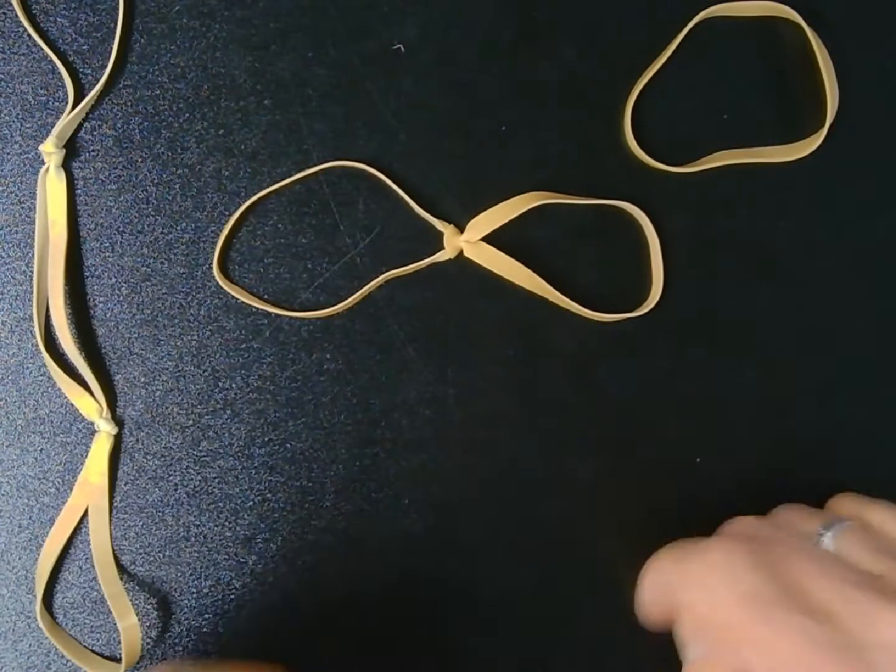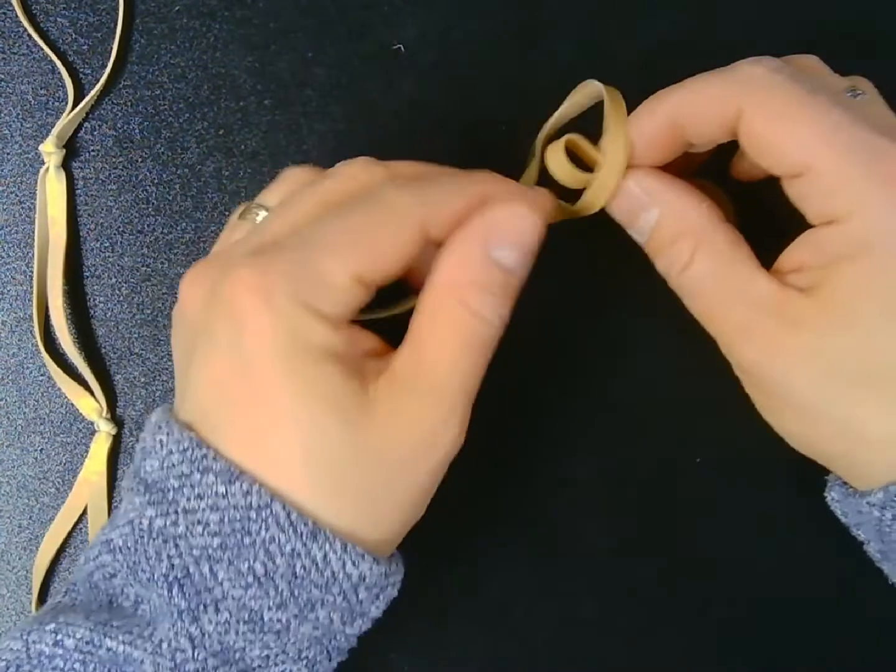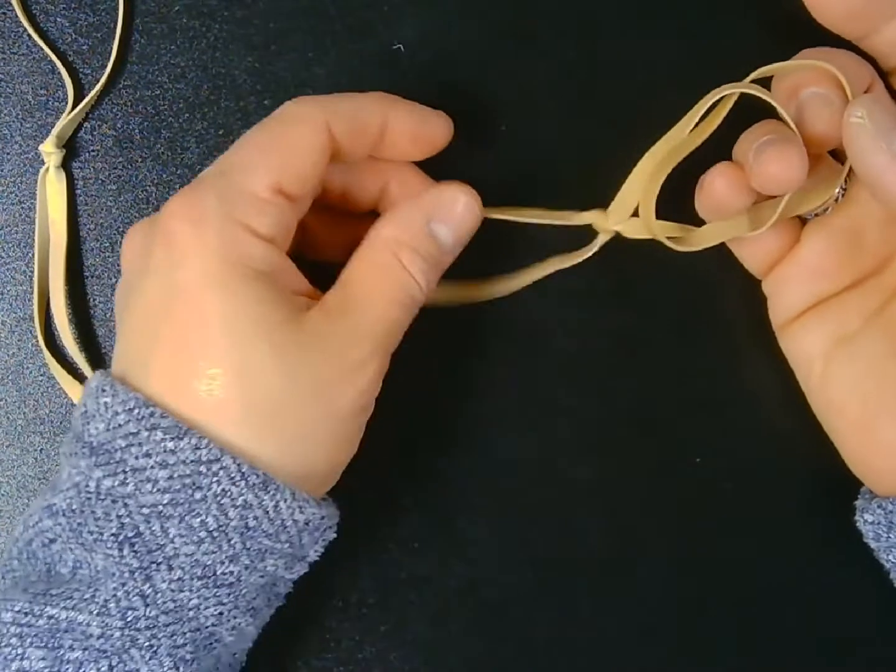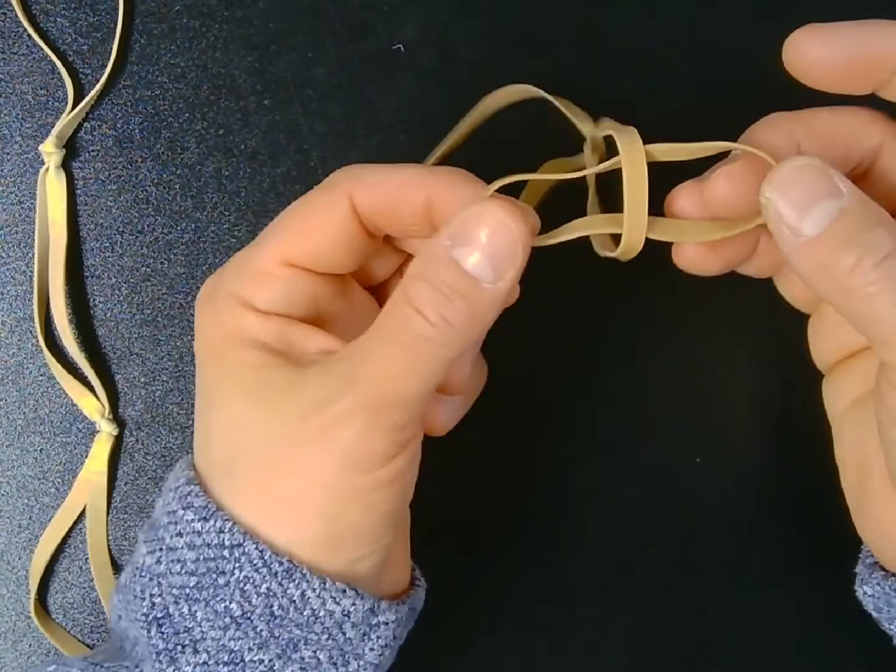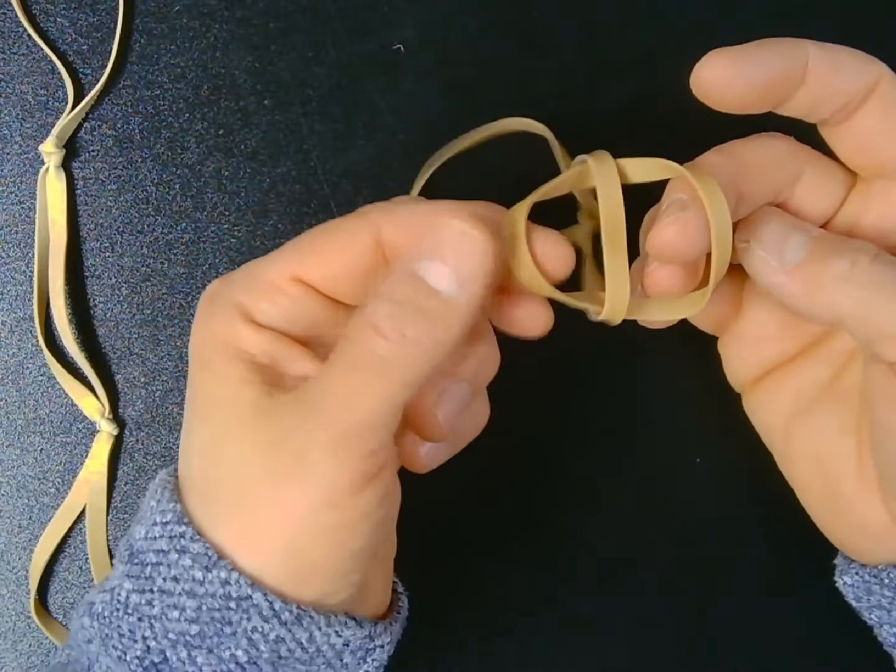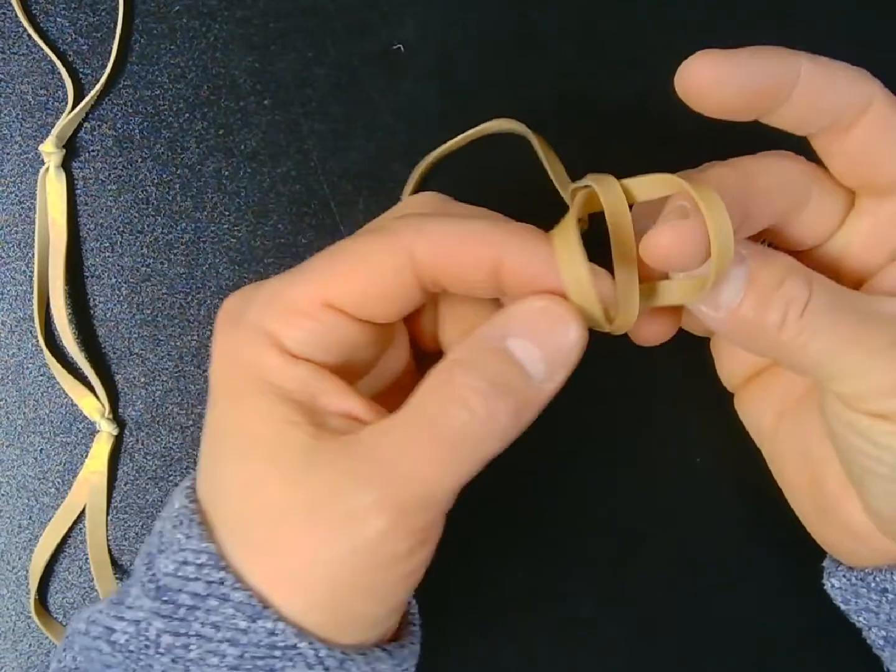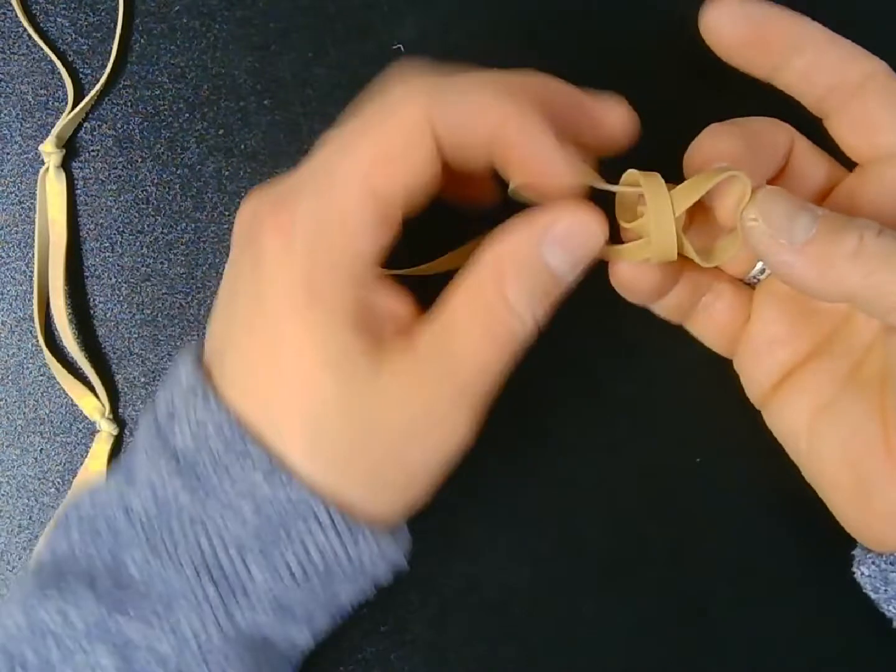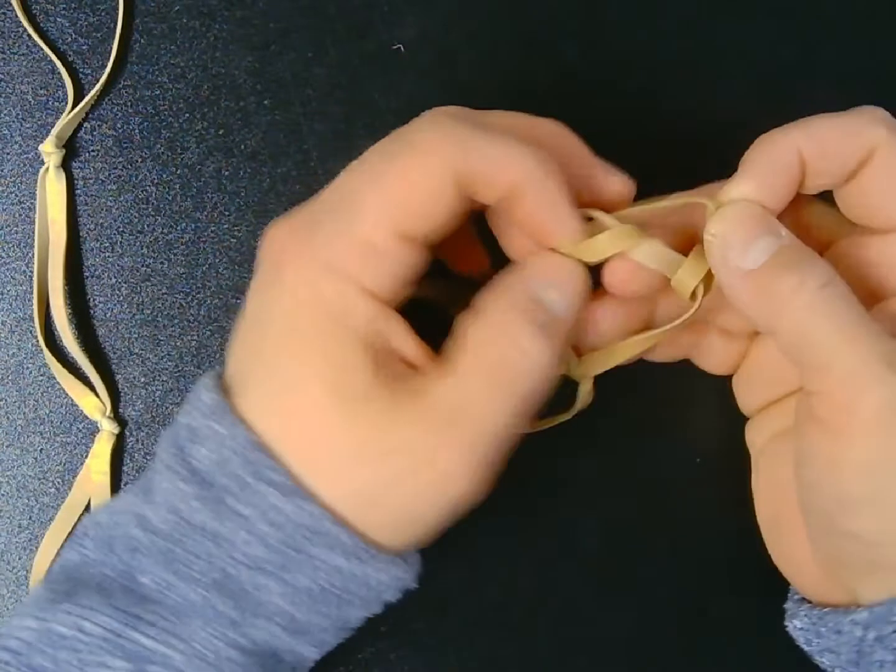So now that I have two rubber bands connected, I'm going to thread the third rubber band through one of the two holes, one of the two other rubber bands. And then I'm going to take one end of the third rubber band and thread it through the other loop right there. Let me take that real slow so you can see it.